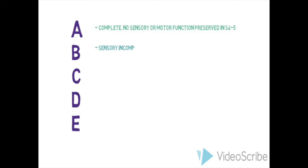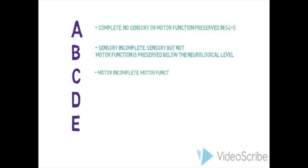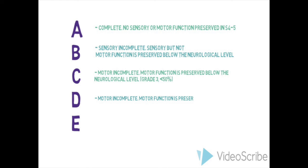The ASIA Impairment Scale grade can now be determined, classified from A to E. If the injury is complete, it is grade A. If the motor injury is complete but there is some sensory function below the neurological level of injury, the injury is grade B — sensory incomplete. Grades C and D are motor incomplete, with motor sparing below the neurological level. The injury is grade C if less than half of the key muscles below the level of injury are graded at least 3 out of 5, and grade D if half or more are graded at least 3 out of 5. The lesion is grade E if there is no neurological deficit.